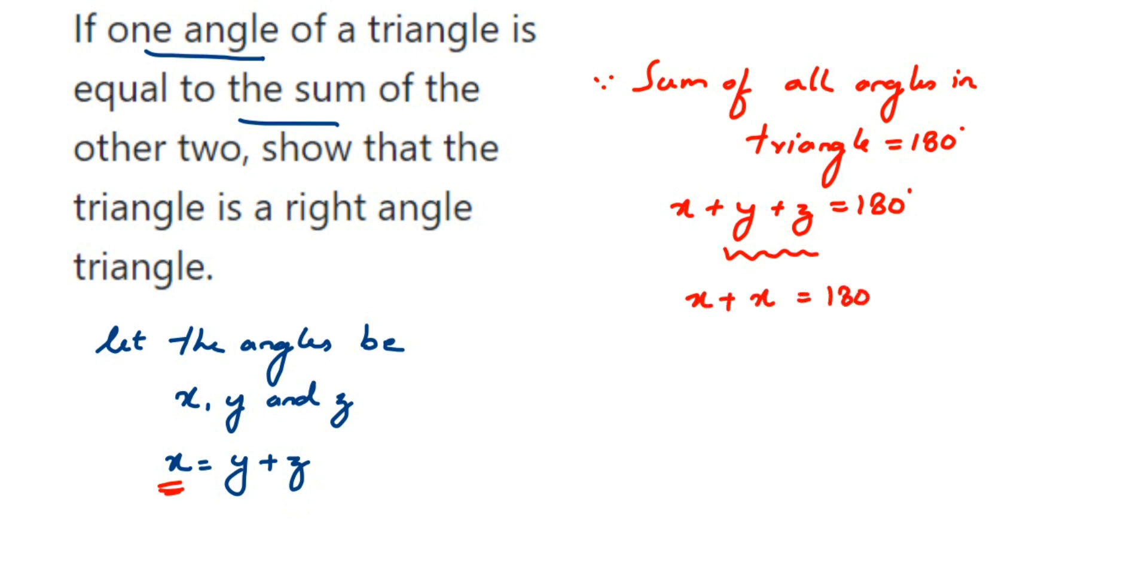So x plus x is 2x. 2x is equal to 180 degrees. I want only the value of x, so I'm going to transpose 2 to the other side. 2 is in multiplication, when transposed it comes in division. So 180 divided by 2 equals 90. Therefore, x is equal to 90 degrees.